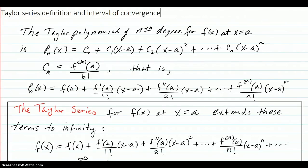The Taylor series definition and a discussion about interval of convergence. We saw that the Taylor polynomial of the nth degree for f(x) at x equals a was equal to this, and those coefficients were the derivatives of f evaluated at a divided by the power factorial, the k factorial. So written out, you get this. That's what the Taylor polynomial was, or is.